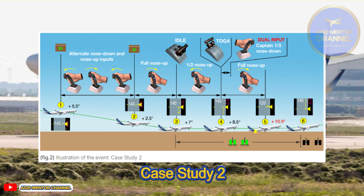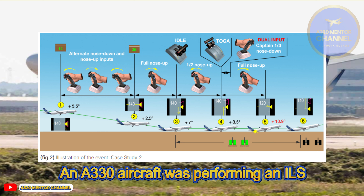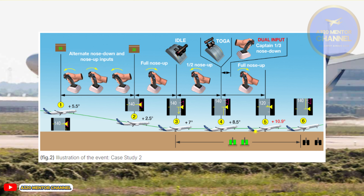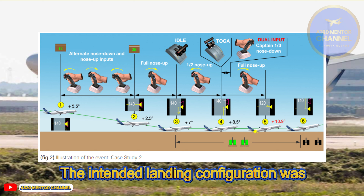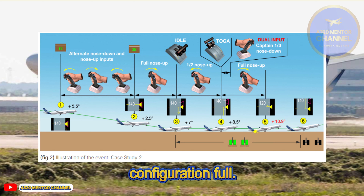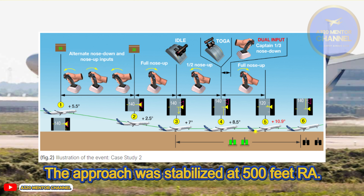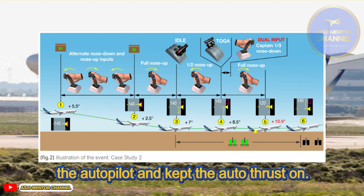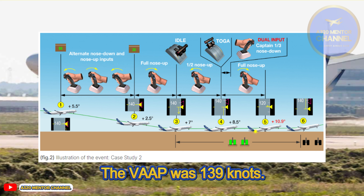Case Study 2 – Event Description. An A330 aircraft was performing an ILS approach with good visibility but in gusty wind conditions. The intended landing configuration was full. The approach was stabilized at 500 feet RA. The first officer, who was PF, disconnected the autopilot and kept auto thrust on. V-app was 139 knots.